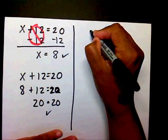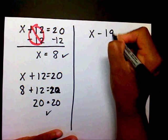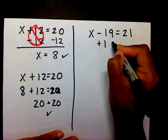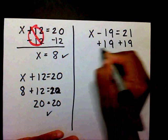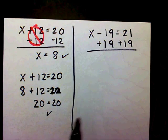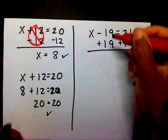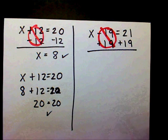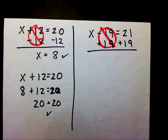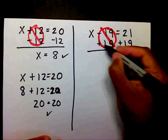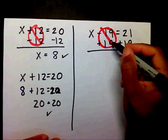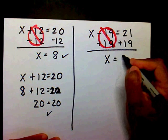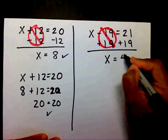The next problem you had was x minus 19 equals 21. You should have added 19 to both sides. Again, you have a zero here. If you have not watched the video on adding integers, please watch that video so I can explain this process in detail. You have x equals 21 plus 19, that's going to be 40.